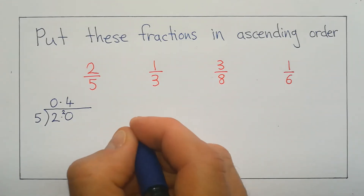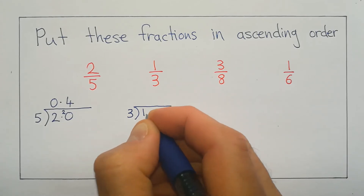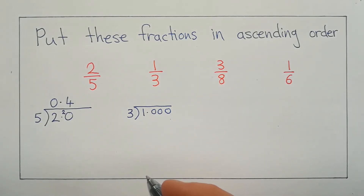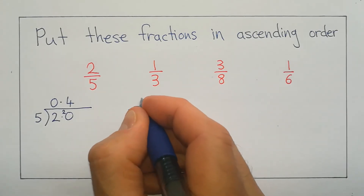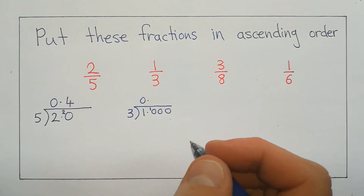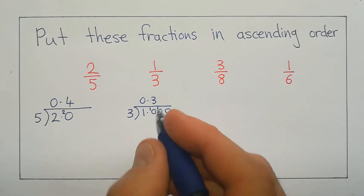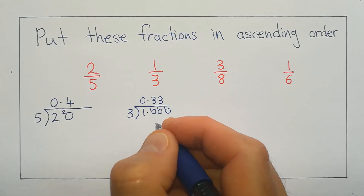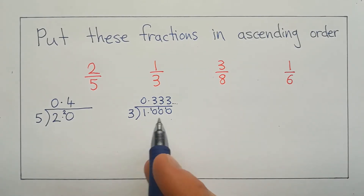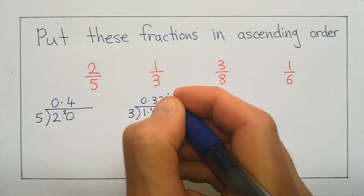Now we'll do the same for a third. We'll do our bus stop — put the 3 on the outside, 1 on the inside. I'm going to put a few zeros this time; it doesn't matter how many zeros — if you put too many you can ignore them, if you don't put enough you can add more afterwards. So how many times does 3 go into 1? It doesn't, so we put a 0 and carry the 1 across. How many times does 3 go into 10? 3, 6, 9 — that's 3 times, and 1 more will take us up to 10. So we carry over the 1. How many times does 3 go into 10 again? It's going to be 3 times, remainder 1. And this is going to keep going on, so we're going to get 0.333... — or I can put a dot on top to show it's recurring.